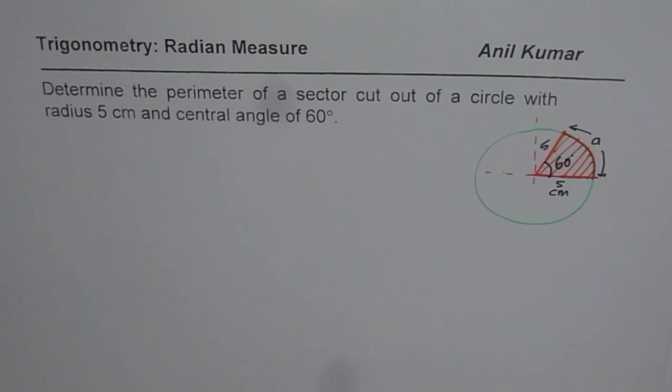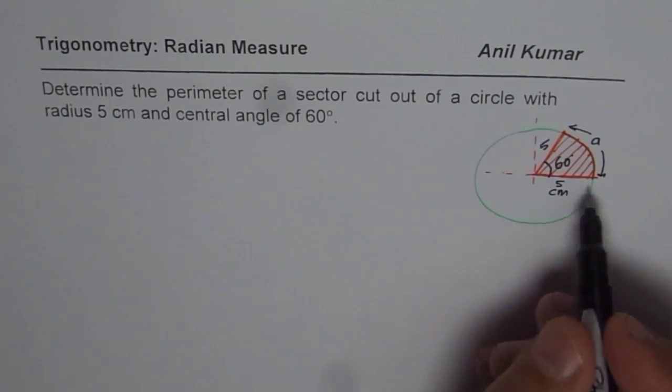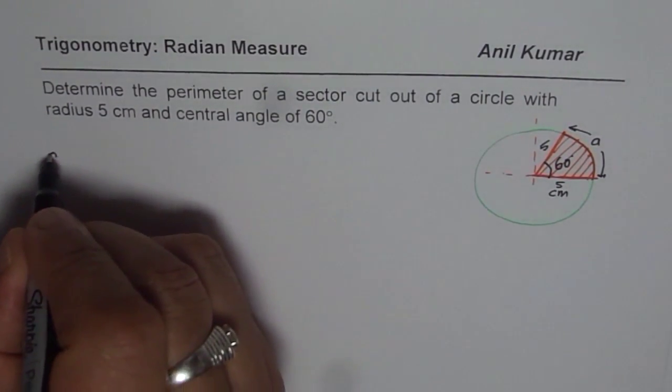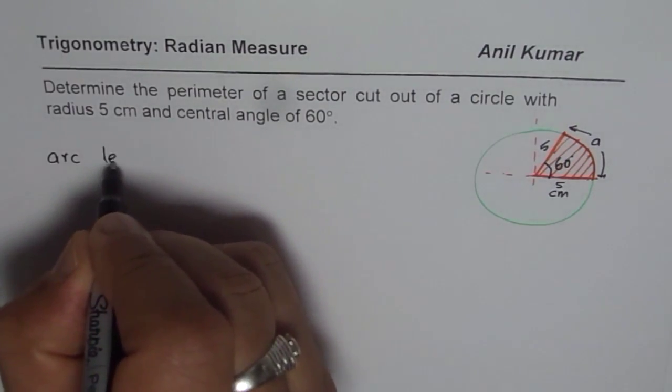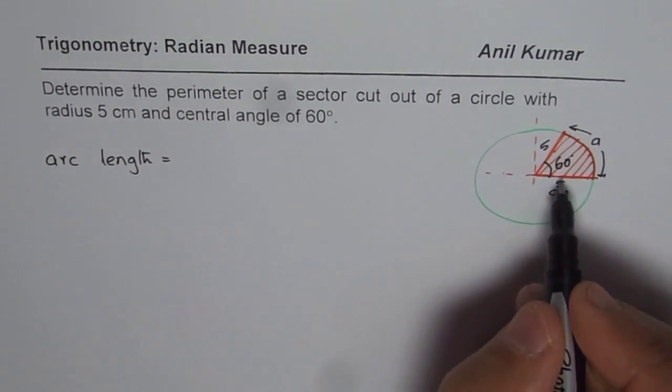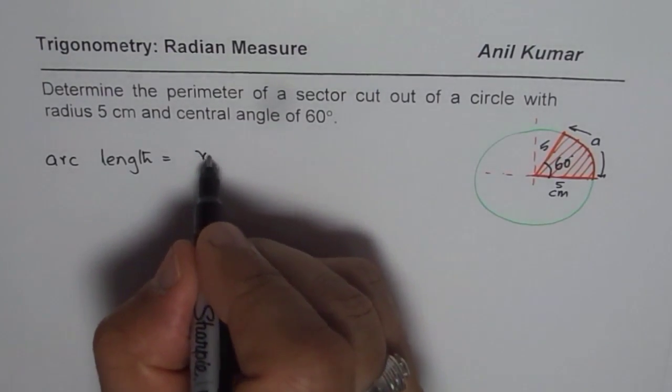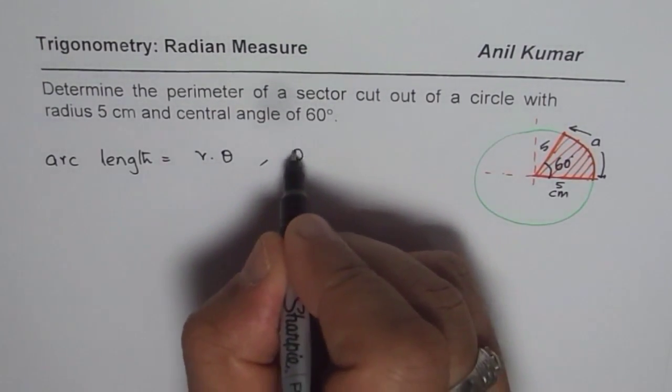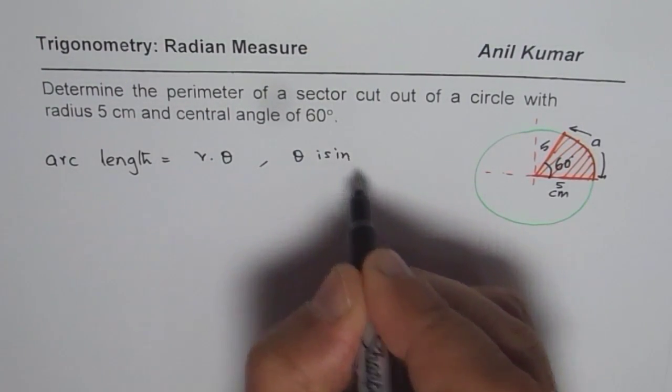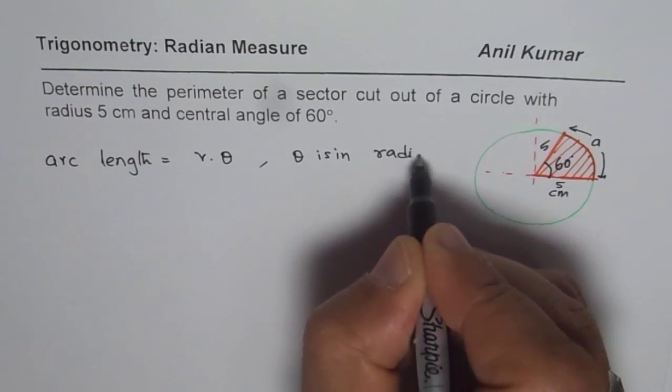I hope now the question is very clear. You can pause the video, answer the question and then check with my solution. What we really know is that arc length equals r theta, equals r times theta, where theta is in radians. That is the key.